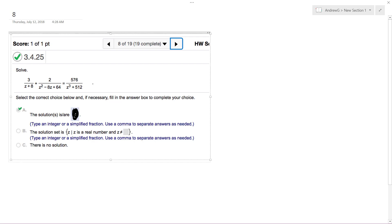So what we do is find the common denominator. z cubed plus 512 breaks down to z plus 8 times z squared minus 8z plus 64. Hey, that works out kind of nice.